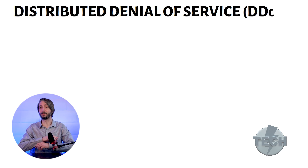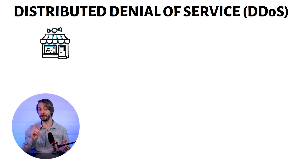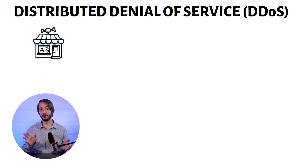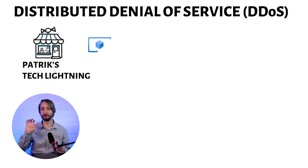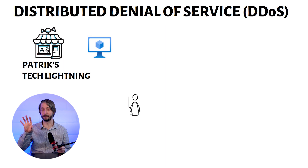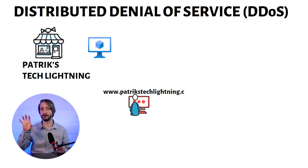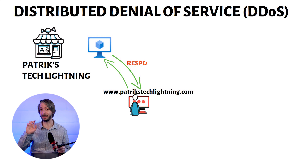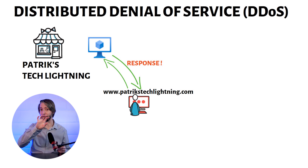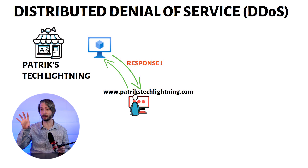Let me first explain what a distributed denial of service, DDoS, attack is. Consider a company called Politextech Lightning — they have a web server which serves content to end users. When a user types in the URL at PolitextechLightning.com, the server needs to respond back with content. Every time someone visits the URL, the server has to respond, and as little as that response may be, it takes resources from the server.